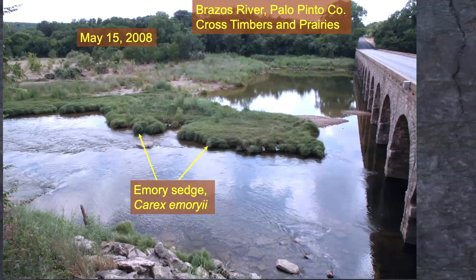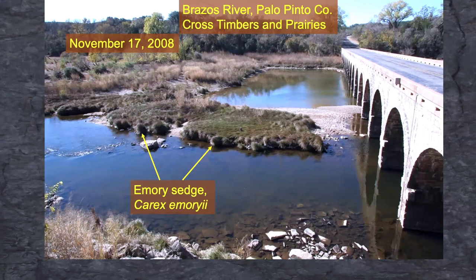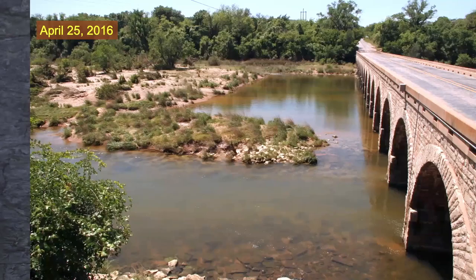Here we are on the Brazos River in Palo Pinto County, a little over a mile below Possum Kingdom Lake. That bridge was built in the 1930s by the Works Progress Administration — kind of like the old CCC camp days. They built a good bridge because it has stayed. That patch of Emory sedge — I've put a couple of arrows at different points. Pick a point; we're going to look at it as we go forward. This was May 2008. The next photo is November 2008 — is your point still there?